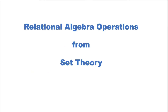Now we will see the second category. The first category is sigma, pi, and rho. Now you are becoming familiar with these three operations: sigma, pi, and rho. Now we can go for the set theory operations. From set theory we will choose union, intersection, and this is called the minus or set difference operator. We will see the application of these three one by one.